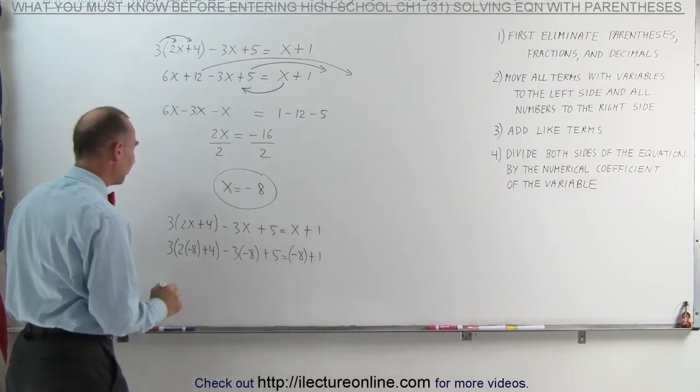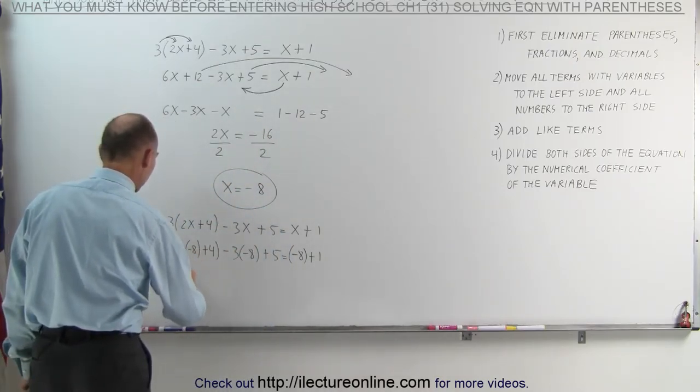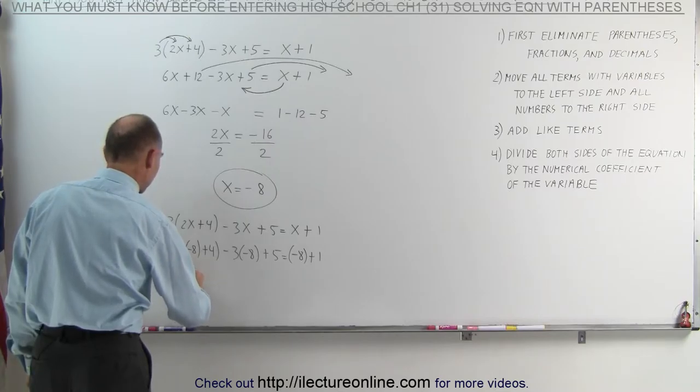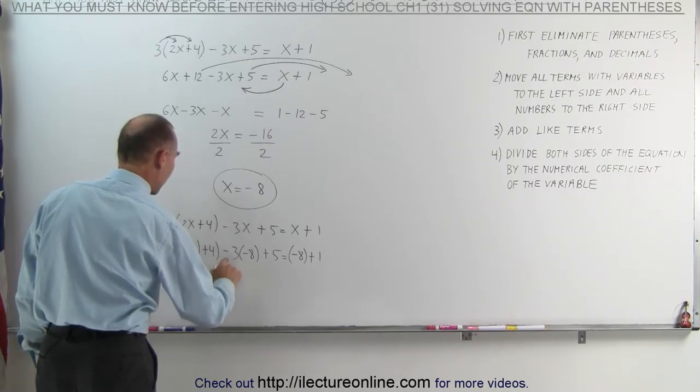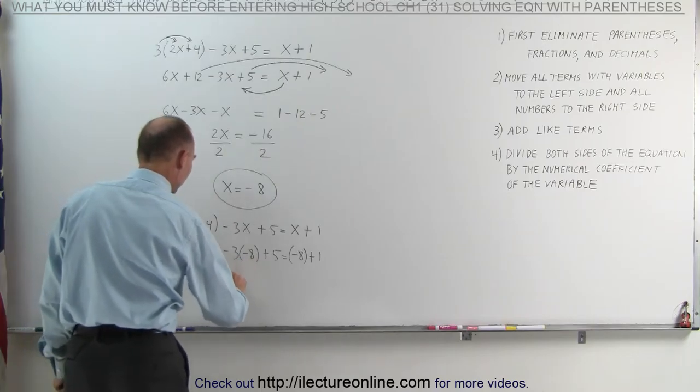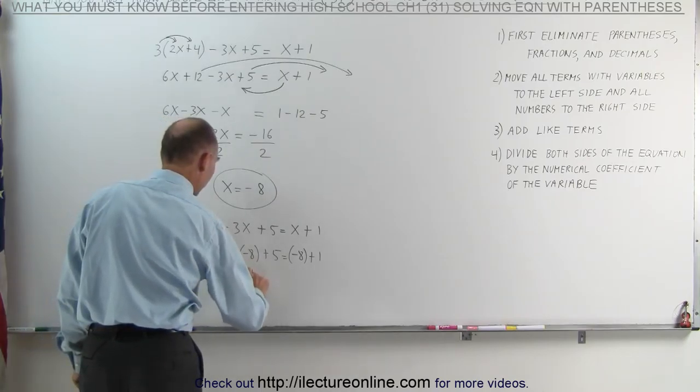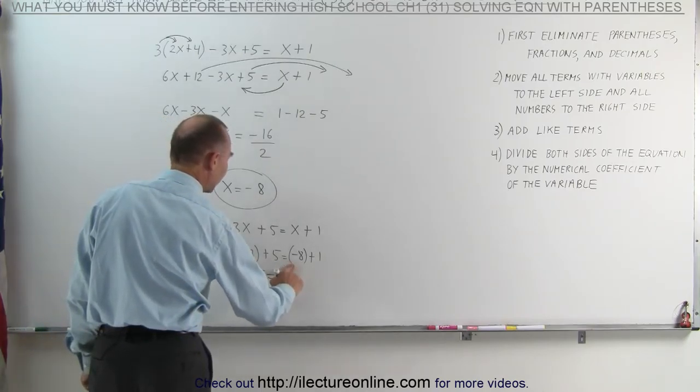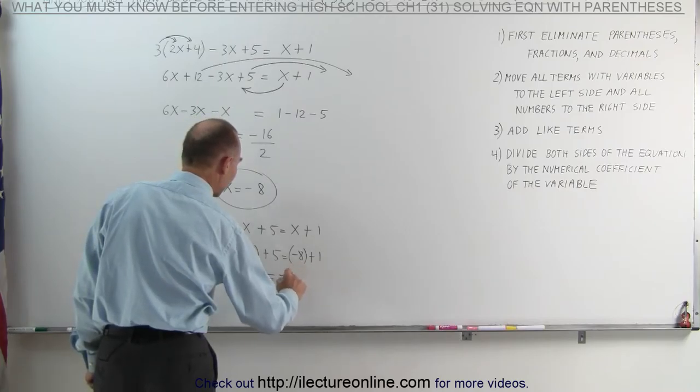Simplifying this, we get the following. First, we multiply this together. We get 3 times negative 16 plus 4. A minus 3 times a minus 8 is a plus 24 plus 5 equals a negative 8 plus 1 gives me a negative 7.